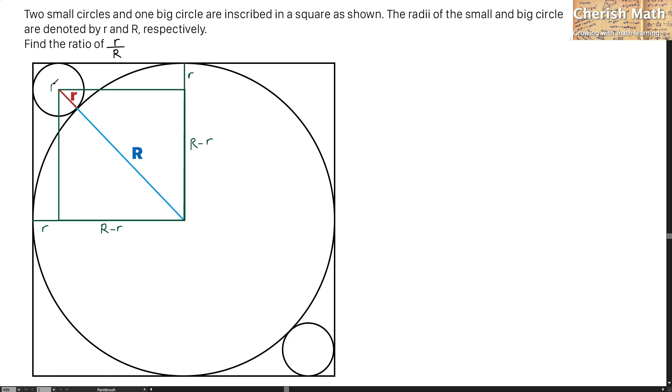Let me do some labeling with the letters. This is A, B, C. Now, by referring to triangle ABC, I am going to use the Pythagorean theorem to solve the problem.